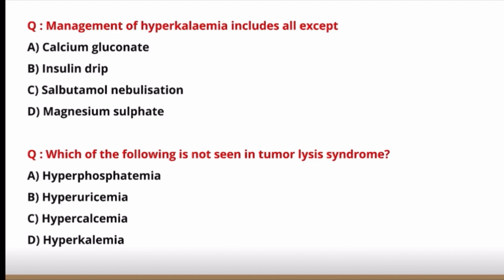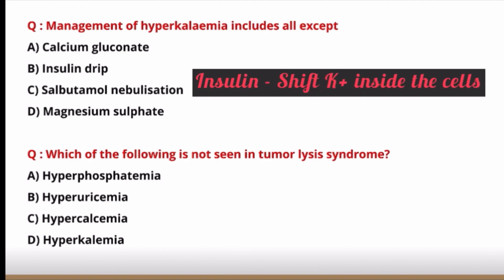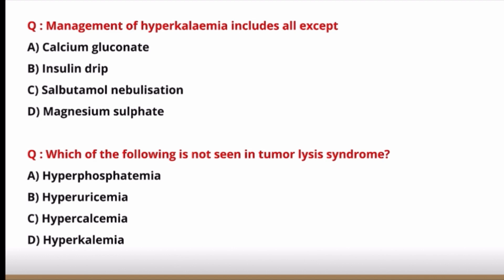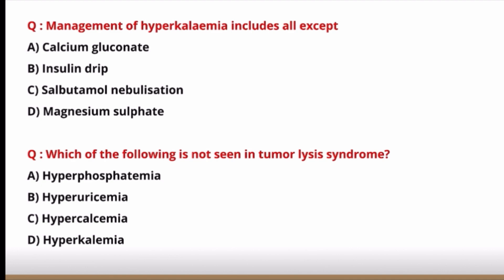Next question: management of hyperkalemia includes all except — calcium gluconate, insulin drip, salbutamol nebulization, and magnesium sulfate. Calcium gluconate is the first step to stabilize the membrane; insulin promotes movement of potassium inside the cell; salbutamol nebulization (beta-2 agonist) is also used. Magnesium sulfate is not used in treatment of hyperkalemia — that is the correct answer.